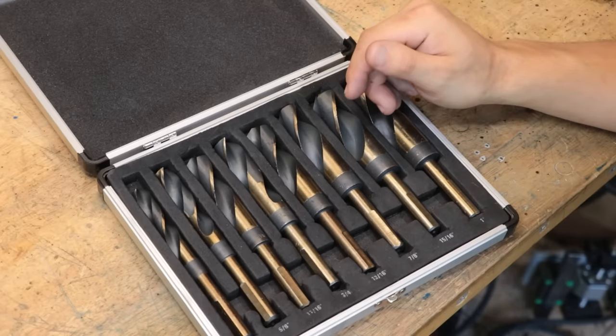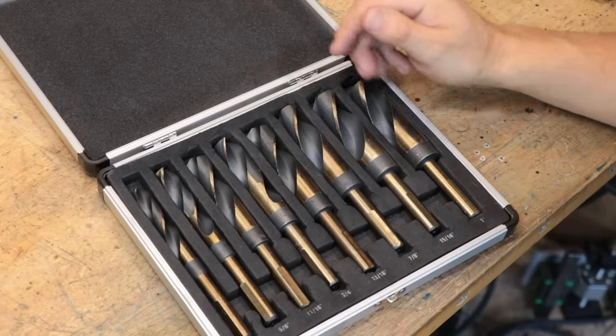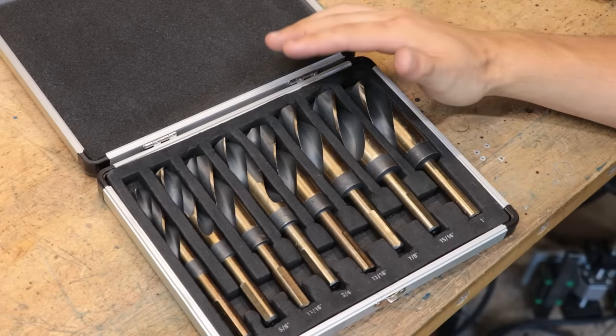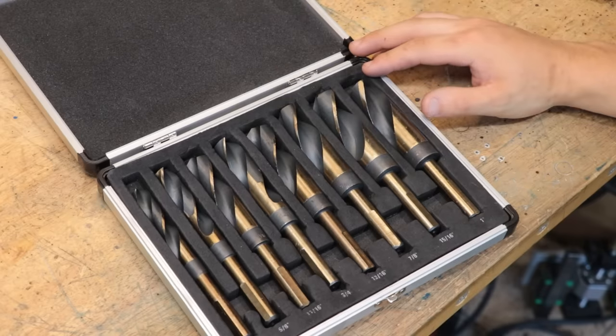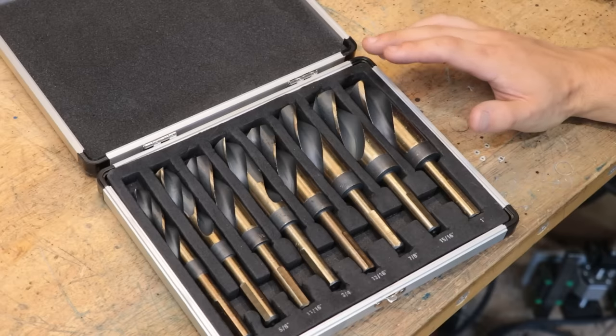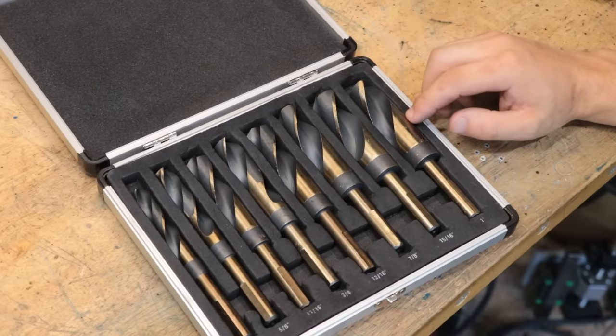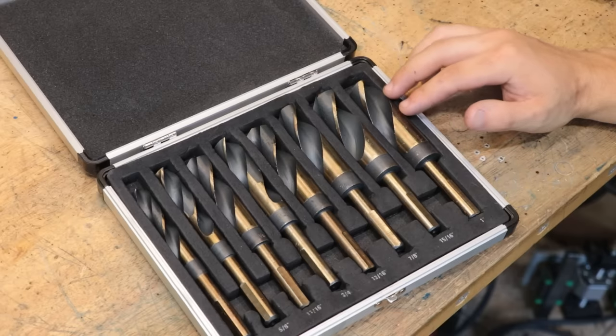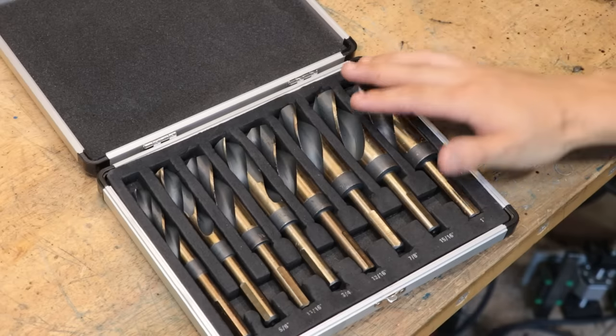So what I eventually settled on was, I'd buy the cheap set from China, and whichever drills got used the most would eventually be replaced with good quality Sutton drills, either reduced shank, or more appropriately, probably Morse taper drills. And judging by the look of things so far, that day is probably going to come sooner rather than later, because these drills, well, they're not looking good.